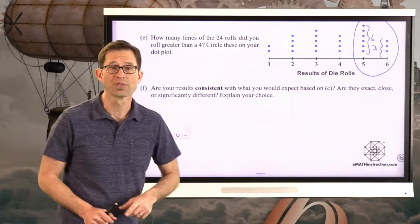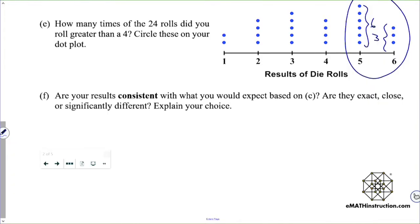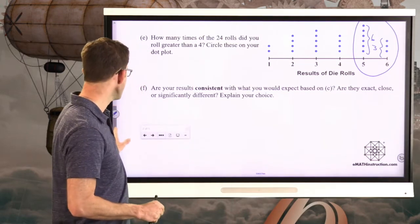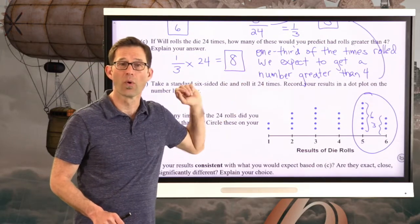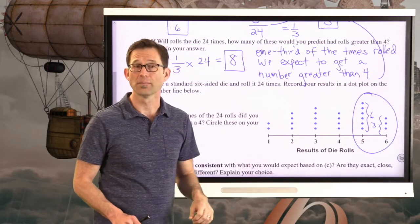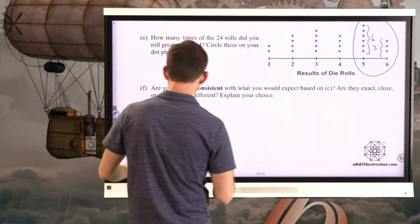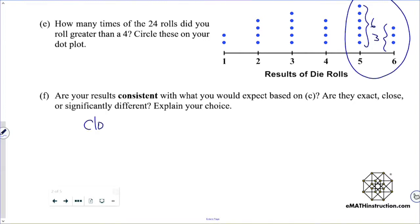And if I look at my dot plot at least, all the numbers that were greater than 4 are right there. And what did I have? I ended up rolling 6 of these things and 3 of these. So I rolled six fives and I rolled three sixes. And letter F, and again, you'll have to answer this for yourself. Are your results consistent with what you would expect based on C? Are they exact, close, or significantly different? Explain your choice. So again, for you, you'll have to answer that for yourself and we'll talk about it a little bit. Our prediction in C was that we should have had 8 times when we rolled a number that was greater than 4. I ended up having 9 times.